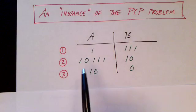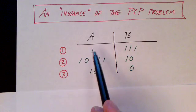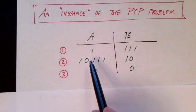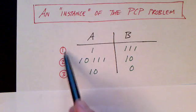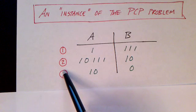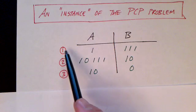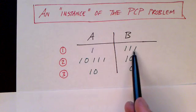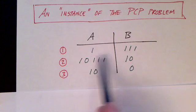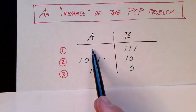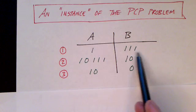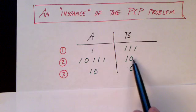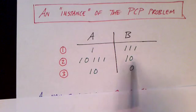Here's another instance of the post correspondence problem. I've drawn it a little bit differently to show you that it's the same problem although it's expressed in a slightly different way. Here we have three tiles which I've numbered one, two, and three. Instead of having a top and a bottom we have an A and a B part. The first tile has a single one on top and three ones on the bottom. The second tile is 10111 and the B part is 10. Then we have a third tile.